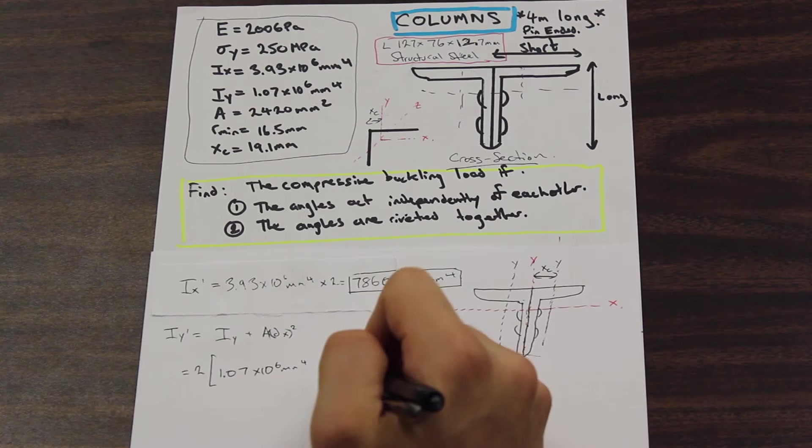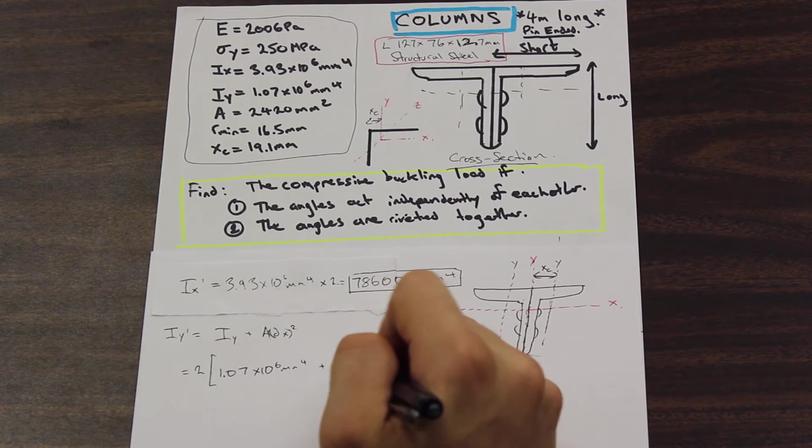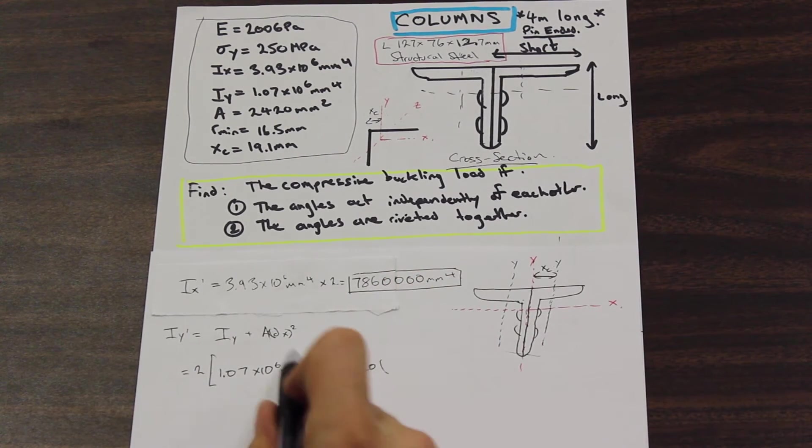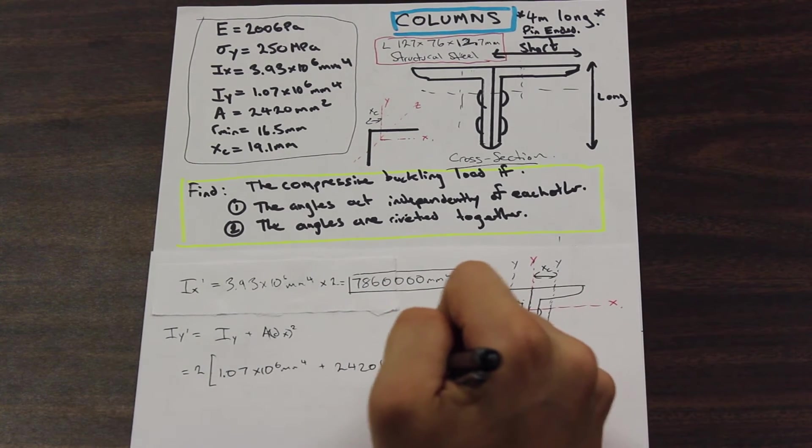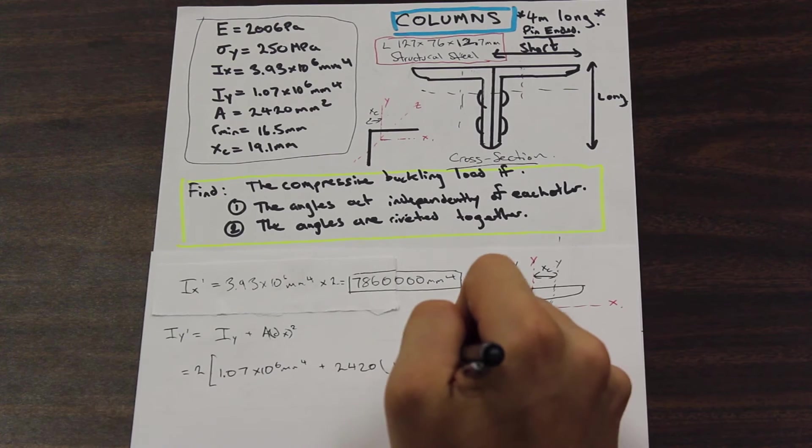A is 2,420, and our dx is our xc. So our xc is 19.1. We're going to square that.